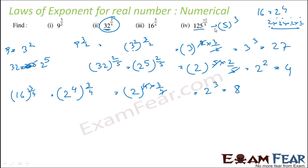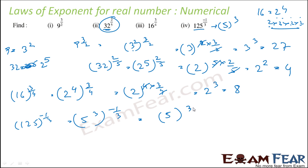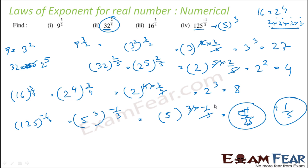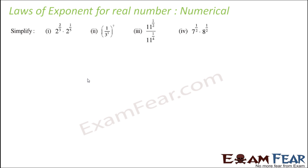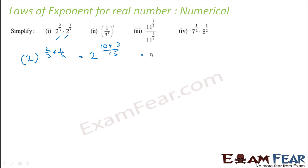For 125 to the power minus 1 by 3: since 125 equals 5 to the power 3, this becomes 5 to the power 3 times minus 1 by 3, which simplifies to 5 to the power minus 1, that is 1 by 5. Next: 2 to the power 2 by 3 multiplied by 2 to the power 1 by 5. Adding the exponents gives 2 to the power 2 by 3 plus 1 by 5, which simplifies to 2 to the power 13 by 15.